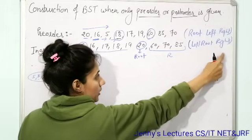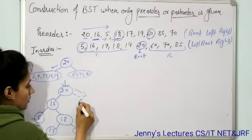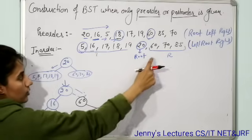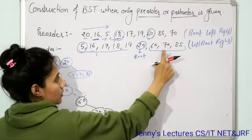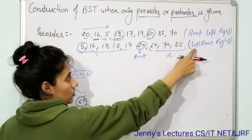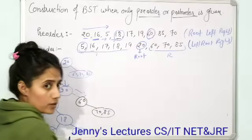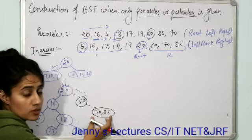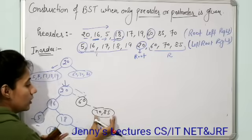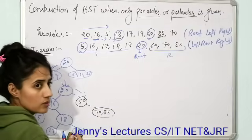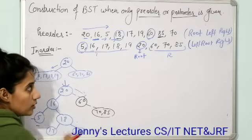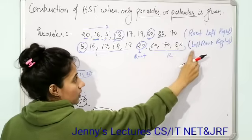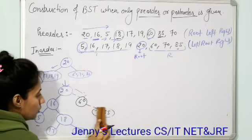Now check in in-order what is to the right of 60 — that would be the right sub-tree of 60. To the right of 60 in the in-order we have 70 and 85. Out of these two, check which one comes first in the pre-order. 85 is coming first, so 85 would be the root. Since 85 is the root, 70 is to the left of 85 as the left sub-tree.